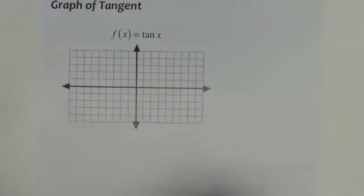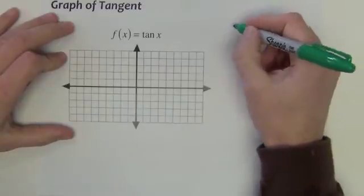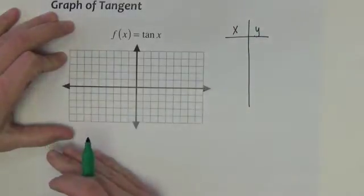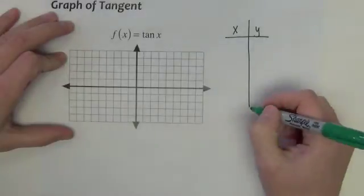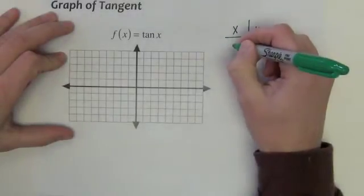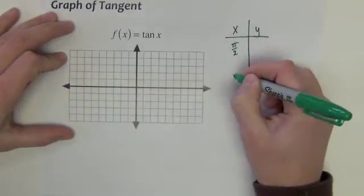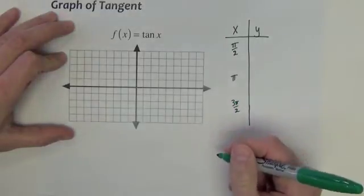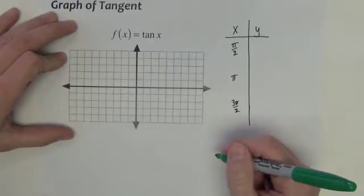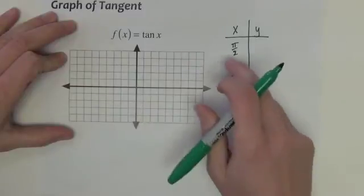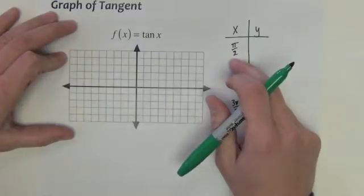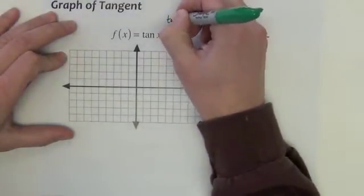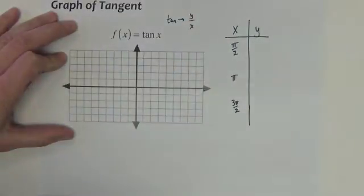We'll begin with tangent. And again, just like with the sine and the cosine graphs, it's a new function, so we begin with the table of values. We can pick anything that we want for the tangent graph. Let's look at π/2, π, and 3π/2. Tangent is the y divided by the x.